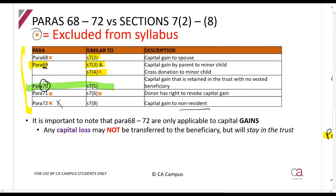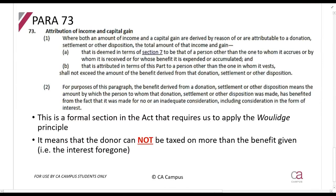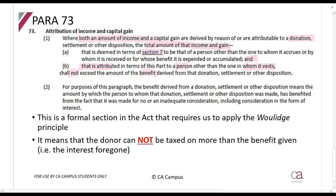Paragraph 72 has to do with non-residents and is excluded from your syllabus. Paragraph 73 is formally written into the Act and tells you that for CGT you should still apply the Volach Principle. In other words, the donor can't be taxed more on the capital gain than the interest they would have had — where both income and capital gain are derived by reason of a donation, the total attributed to a person other than the one to whom it accrues shall not exceed the benefit derived from that donation.